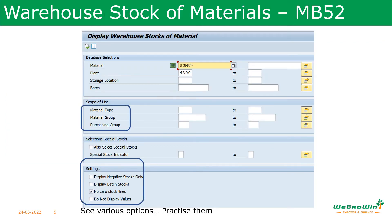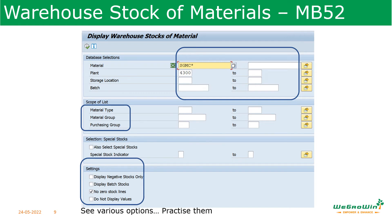The next report is the warehouse stock report for total stock in the plant, called MB52. Here you can enter materials, plant, storage location, material type, and material group. You can also set options such as displaying only negative stocks, excluding zero stocks, or entering special stocks like stock provided by vendor or special stock for customers. Select the required options and execute the transaction.